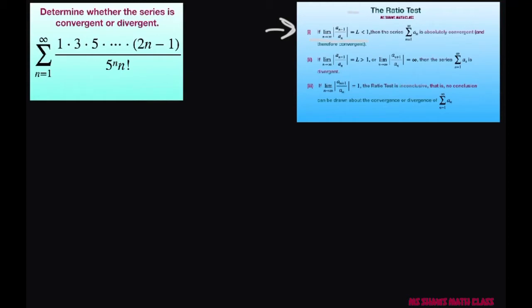I do have this on my Facebook page if you want to save a photo of that, but let me write it out for you. So we have the limit as n approaches infinity, and we're doing the absolute value of a sub n+1 divided by a sub n. This is your a sub n.